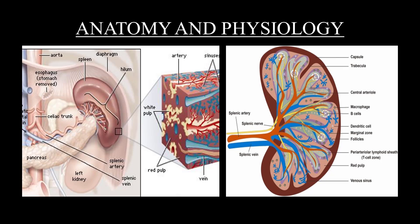The spleen tissue is composed of white pulp and red pulp. The white pulp forms 25% of the spleen and plays the lymphatic and immune role. The red pulp forms the remaining 75% of the spleen and is responsible for recycling of the red blood cells.